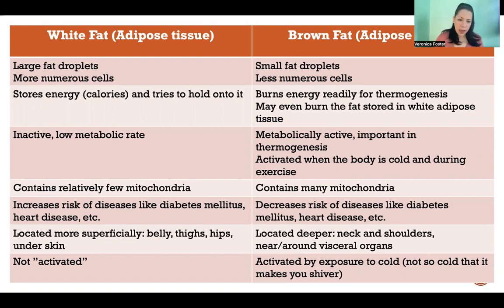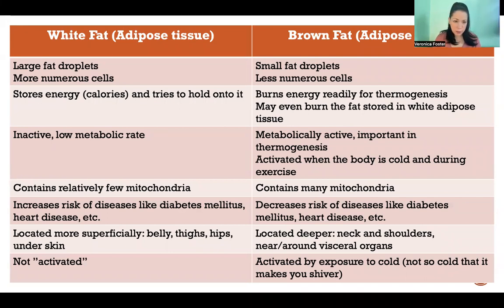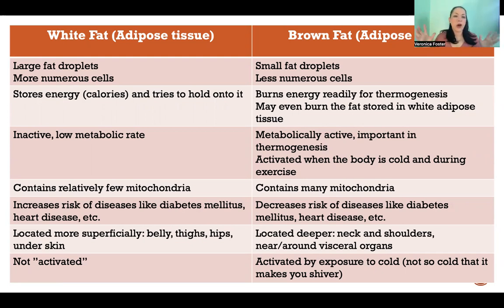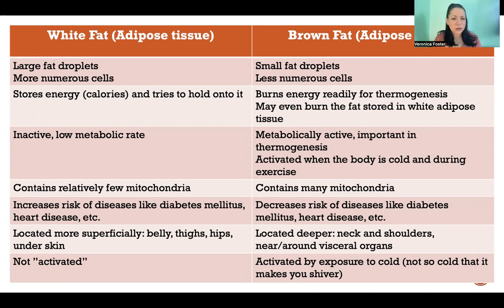In white fat, or white adipose tissue, we have large fat droplets compared to brown fat, where we have small fat droplets. White fat has way more cells in our tissue, whereas brown fat has far fewer cells. So brown fat is smaller and more condensed, whereas white fat is more big and fluffy.